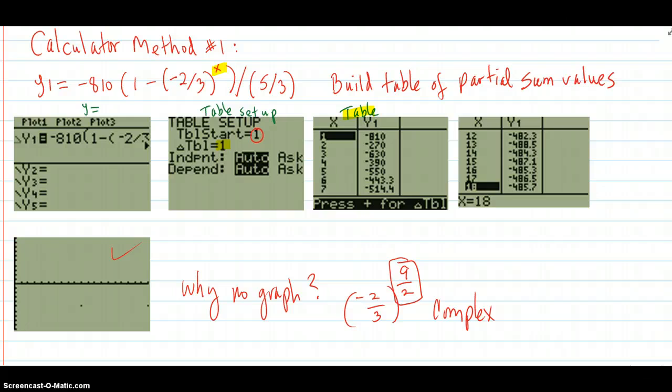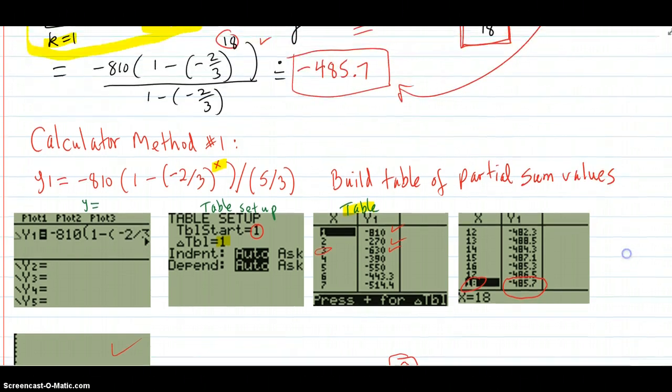And these are the partial sums. So the sum of the first term is negative 810. The sum of the first two terms is negative 270. The sum of the first three terms is negative 630. The sum of the eighth term is negative 485.7.